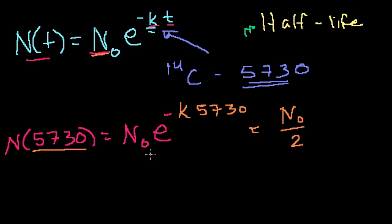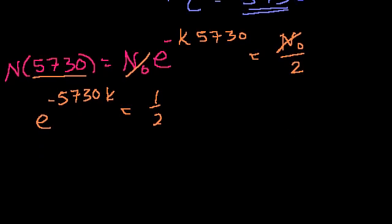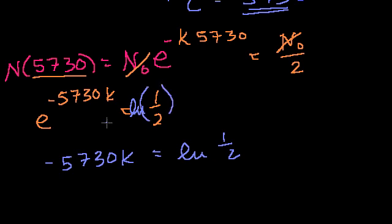So if we try to solve this equation for k, what do we get? Divide both sides by N0, and then we're left with e to the minus 5,730k is equal to 1 half. If we take the natural log of both sides, the natural log of e to anything is just that exponent. So minus 5,730k is equal to the natural log of 1 half.